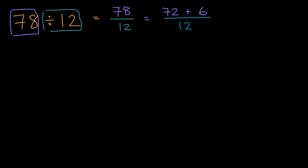And so I can write this as, I can write the 72 twelfths, so this is equal to 72 over 12 plus 6 over 12, plus 6 over 12, or plus 6 twelfths.